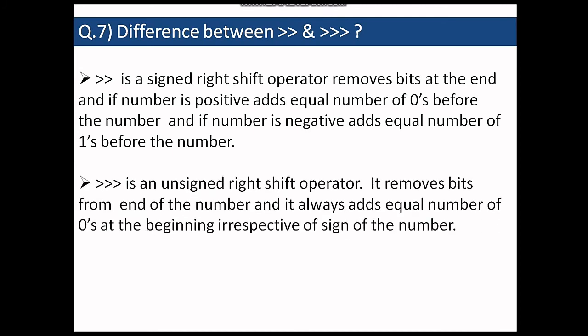In unsigned right shift operator, that is three brackets or three angle brackets, it removes the bits from the end of the number and only zeros are added before the number irrespective of the sign of the number. So your sign of the number does not matter. That is the only difference.